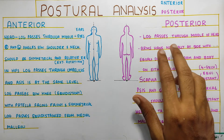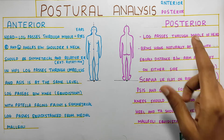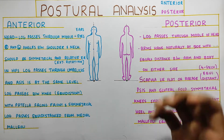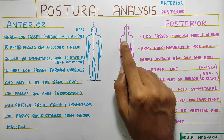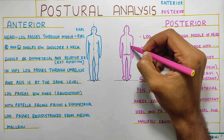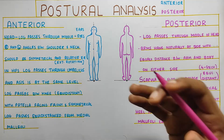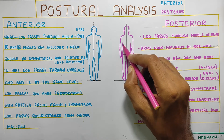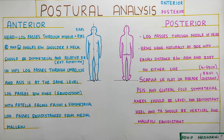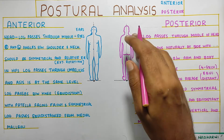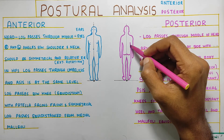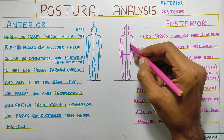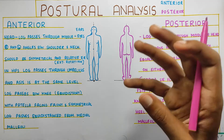Moving to the posterior view, the line of gravity passes through the middle of your head. The arms hang naturally by the side. You can notice the distance present between your arm and the back — sometimes this space will be more on one side compared to the other. This is commonly seen because of latissimus dorsi bulk. On the dominant right side, the latissimus dorsi may be well developed, leaving no space, compared to the left side where more space is visible.